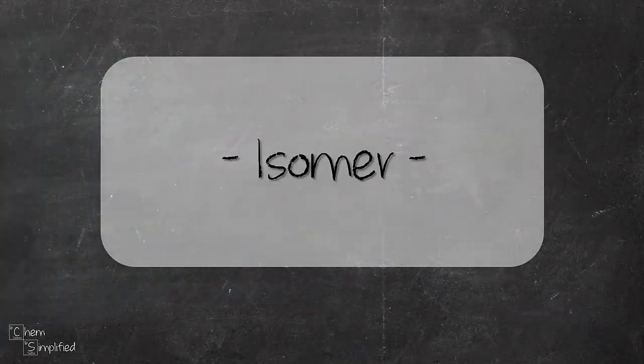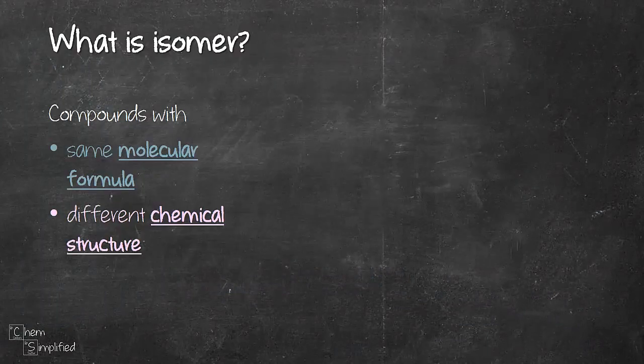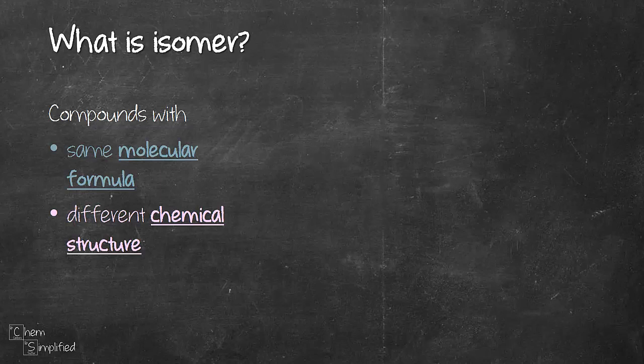Next we go on to isomer. So what is isomer? There are compounds that have the same molecular formula but different chemical structure. So what do I mean by molecular formula and chemical structure?